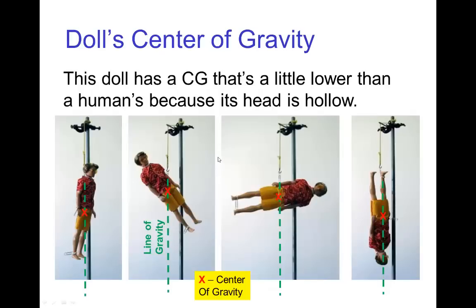Now here's an example. There's a doll and this doll is hanging from different points on its body. And the center of gravity for this doll is located a little bit lower than a normal human center of gravity. The main reason is the doll has a hollow plastic head. Our heads are relatively heavy, which positions our center of gravity a little higher in the torso.